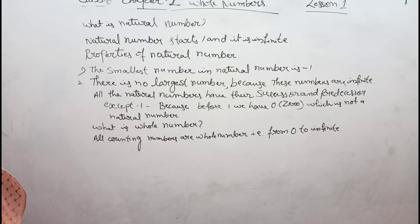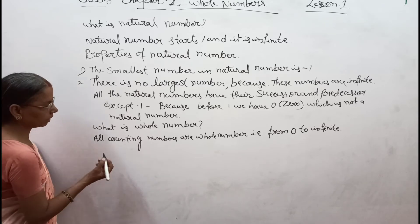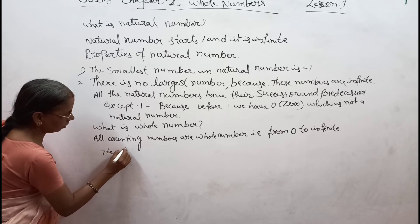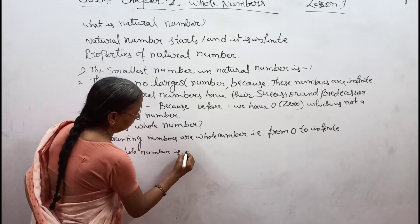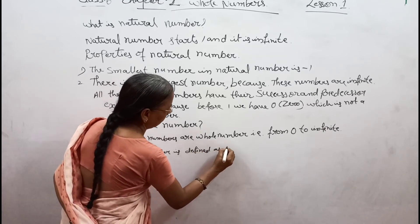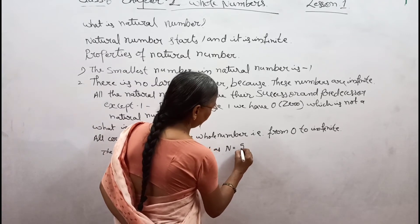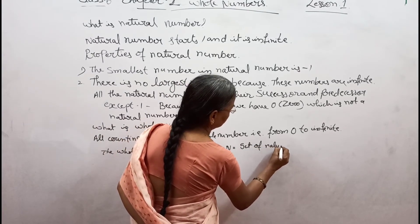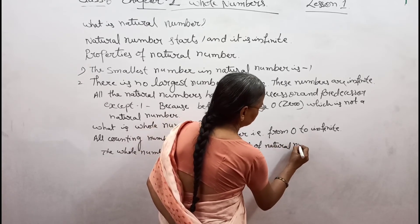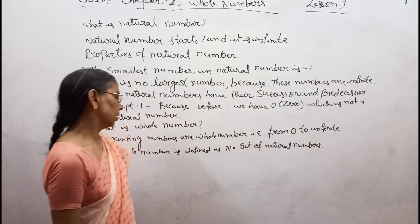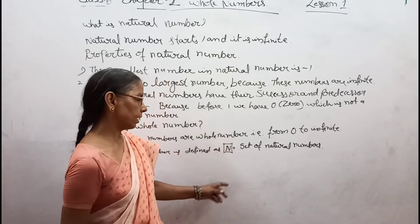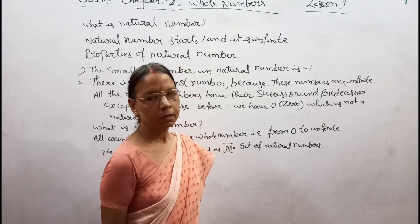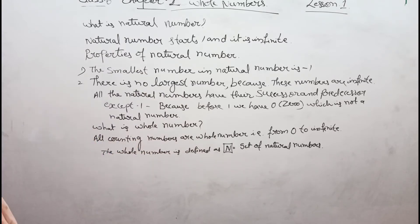The whole number is represented and defined as N. N equals the set of natural numbers including zero. Now we can move to the properties of whole number.